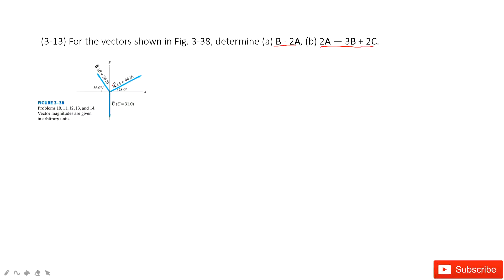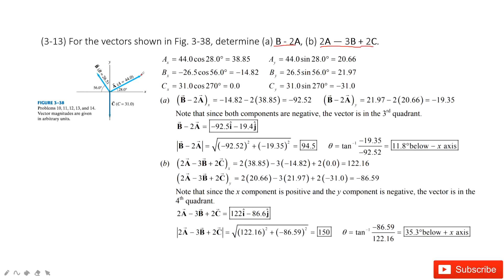We need to project vectors a, b, c into x and y components. When we project vector a, we get ax and ay as a cosine theta and a sine theta.